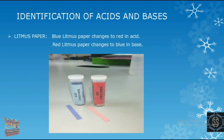We already know that acids taste sour and bases taste bitter, but to identify a new substance as an acid or base, we can't just taste it — it can be really harmful. So for identification of acids and bases, certain indicators are used. The first is litmus paper.